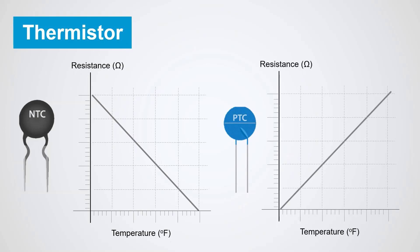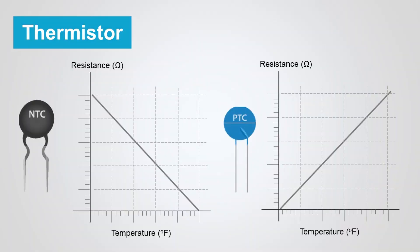While in PTC, positive temperature coefficient thermistors, resistance increases as temperature increases. PTC thermistors are commonly used as overcurrent protection and in resettable fuses.